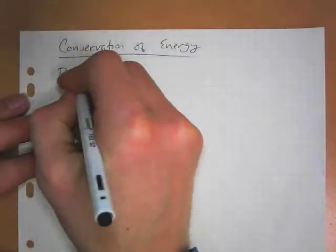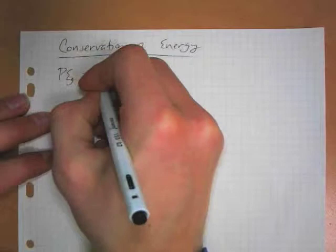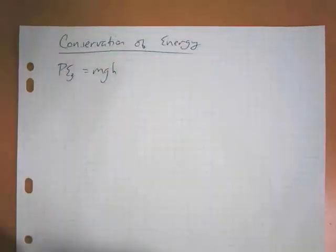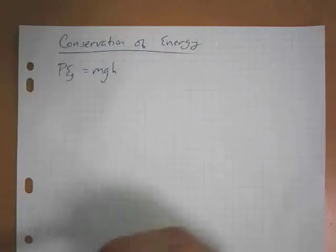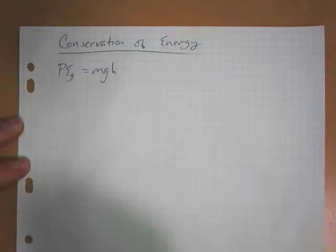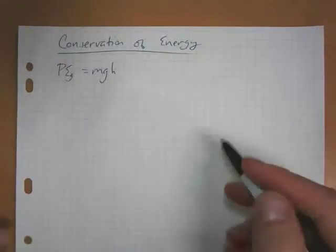We learned that the potential energy from gravity is MGH, but this is only true close to the surface of the Earth. We can't use this when we start moving off into space.